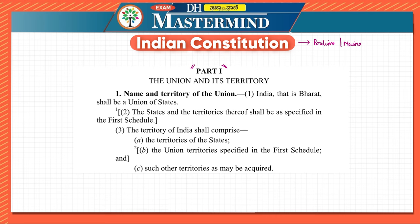We will start reading from the constitution only. I'll try to simplify it as much as possible because the language used in the constitution is a little complex — they have to concentrate on every individual word. For example, if they are saying 'shall be' rather than 'must be', there is a significant difference. There are a lot of details which we have to understand, so let us start with Part One itself.